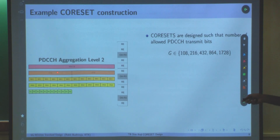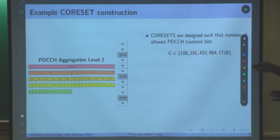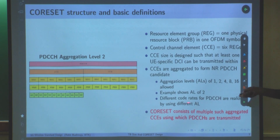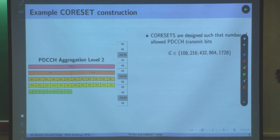For aggregation level 2, you get twice the bits; for level 4, four times; for level 8, eight times; for level 16, sixteen times. For aggregation level 2, the number of REs is 9 per REG × 6 REGs × 2 CCEs = 108 REs, and with QPSK that gives 216 bits. These numbers — the G values — come from these aggregation levels. Different aggregation levels give different G values and therefore different code rates.